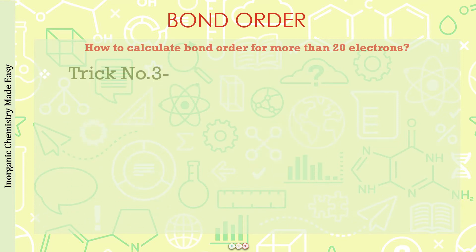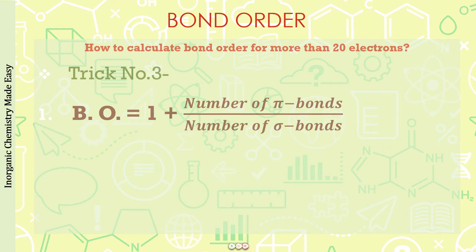Trick number three is even simpler. Bond order equals one plus the number of pi bonds divided by the number of sigma bonds. You do not have to count bonds or atoms — just look at the structure quickly, see how many pi bonds and sigma bonds are present, add their ratio to one, and you have the bond order. Let us verify this with the same two examples.